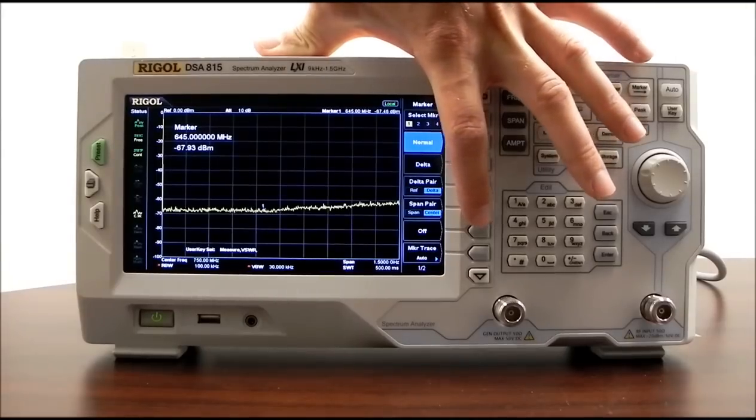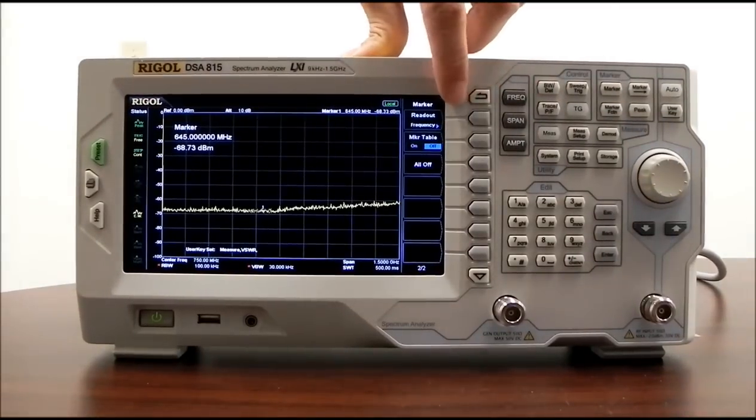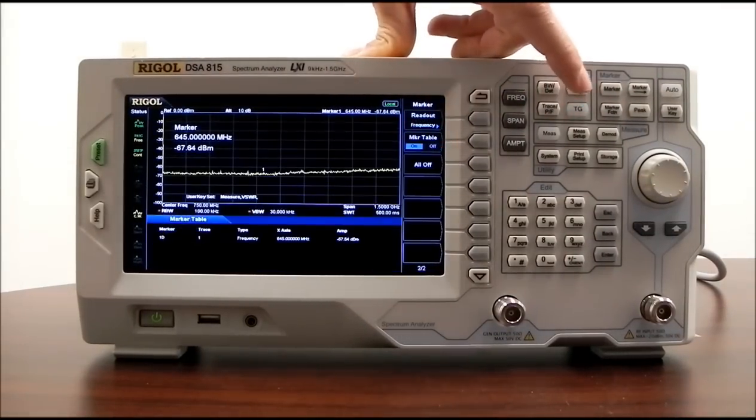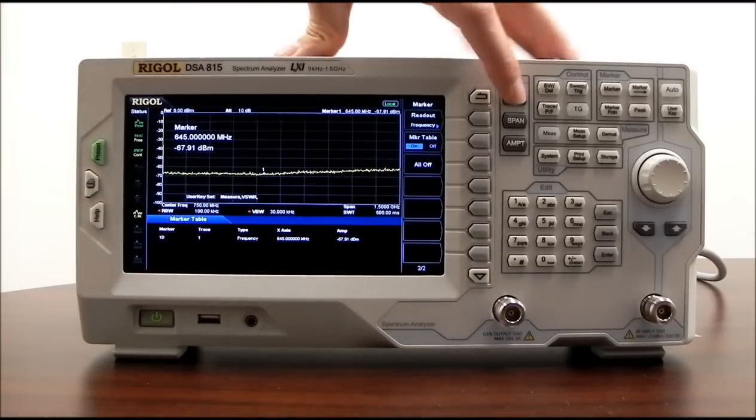We can do span pairs. We can do marker trace. We can also do readout frequency, period, delta time. Marker table, if we had a number of markers available, we would then see all of them available on the bottom of this marker table.